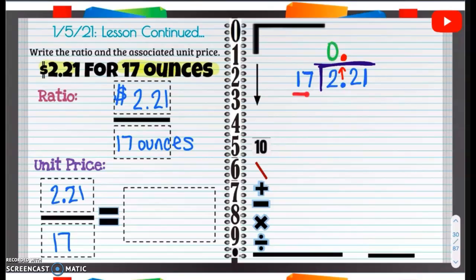Can 17 go into 22? Yeah, it can. How many times can it go in without overflowing? It can go in one time without overflowing. 17 times 1 is 17. We are going to subtract. That 2 will become a 1 because 2 minus 7 we can't do. So that 2 becomes a 1 to make this 2 a 12.